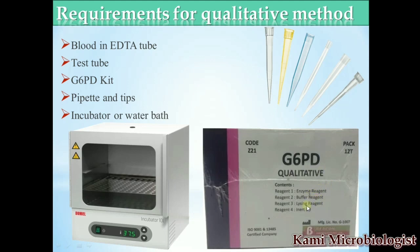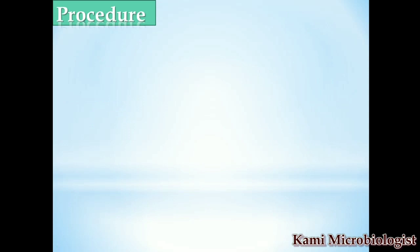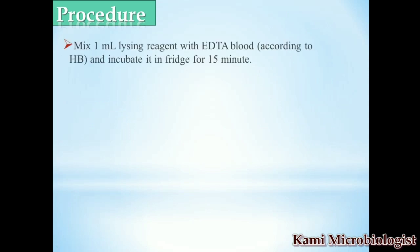Now let's see the procedure. First, take a clean test tube and add 1 ml of the lysing reagent, which is present in the glucose-6-phosphate dehydrogenase kit.